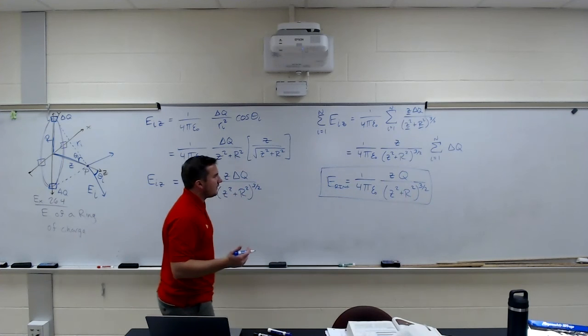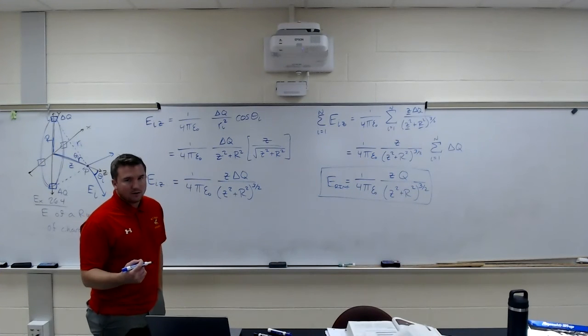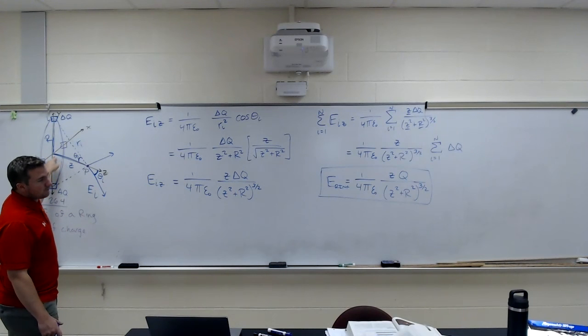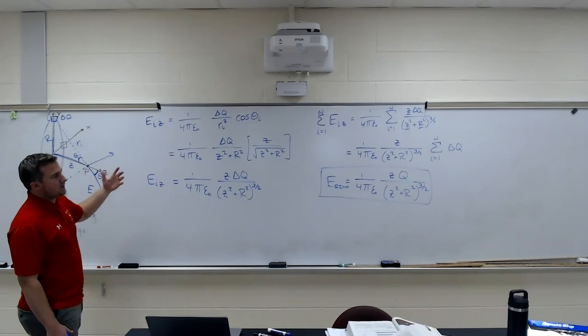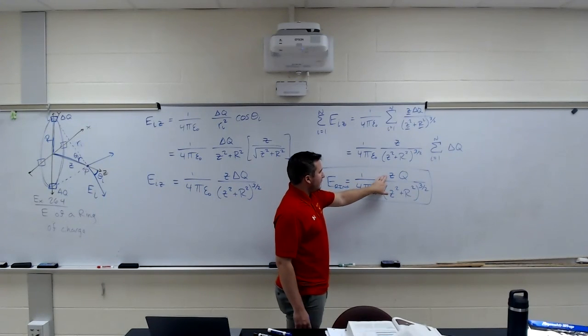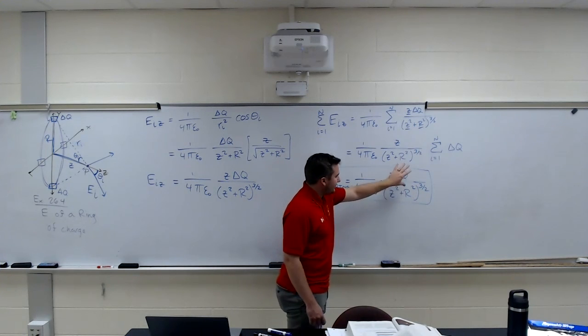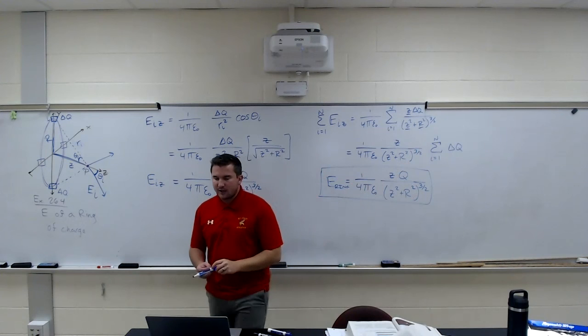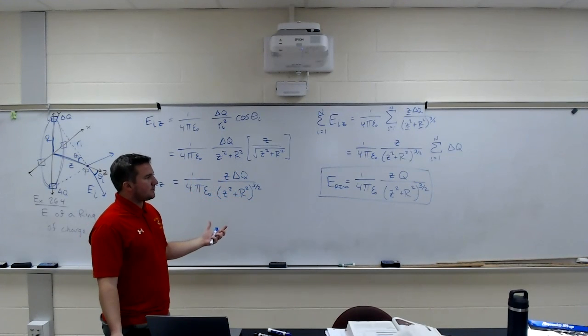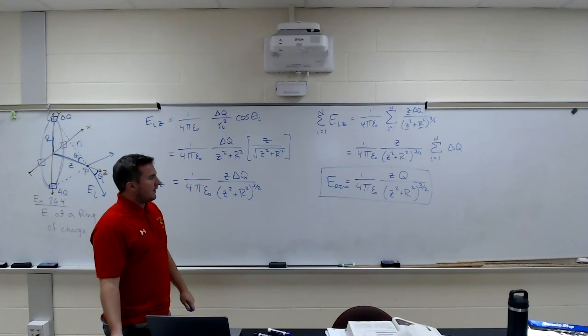And if we look at the case where Z becomes very small, and we approach the center of the circle. Center of the circle or center of the ring, the electric field should be zero because everything is canceling. So as Z approaches zero, we should see that our electric field goes to zero. And because we have a Z in the numerator right here, as that goes to zero, this whole thing is going to become zero. Zero times zero is also zero. So we end up with what we expect as far as the limits go when Z is very much bigger than R or Z is very much smaller than R. So those two make sense.